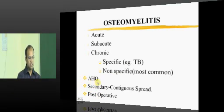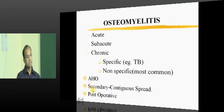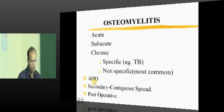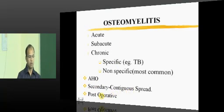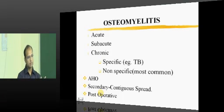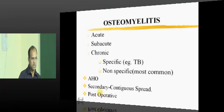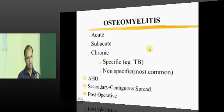The third classification is based on how infection reaches the bone: acute hematogenous osteomyelitis — through the blood route; secondary or contiguous spread osteomyelitis — where infection from skin or surrounding structures spreads directly into the bone; and post-operative osteomyelitis — where devices like nails, plates, or external fixators act as foreign bodies, and failure to maintain sterility during surgery results in bone infection.